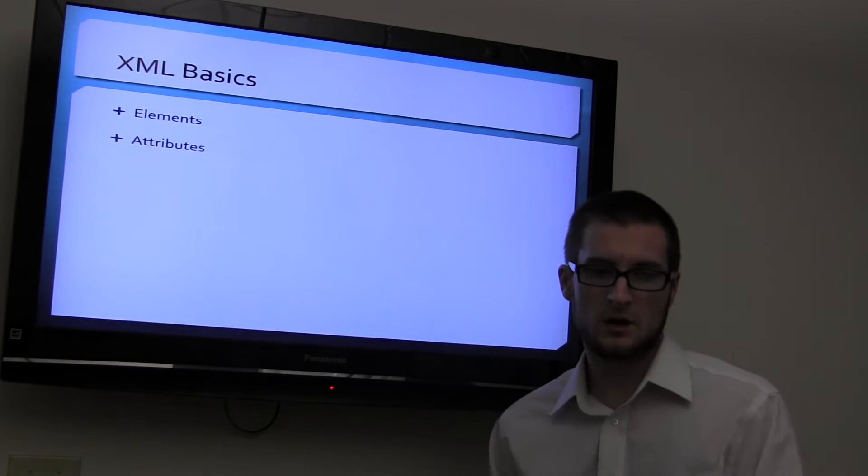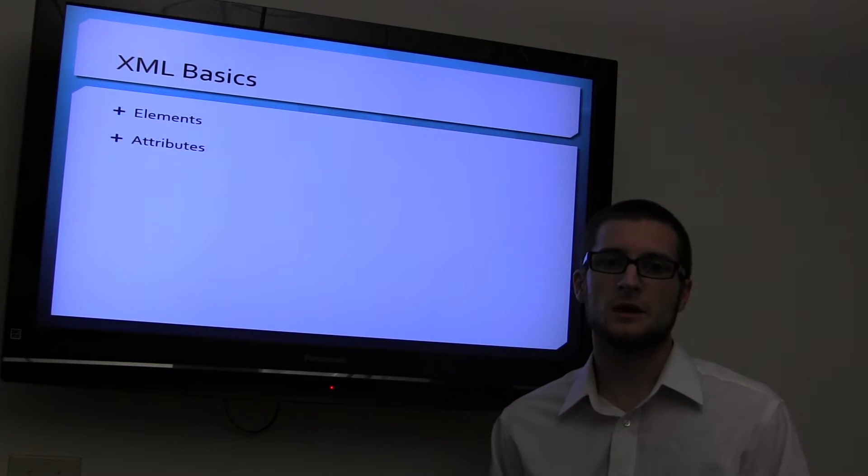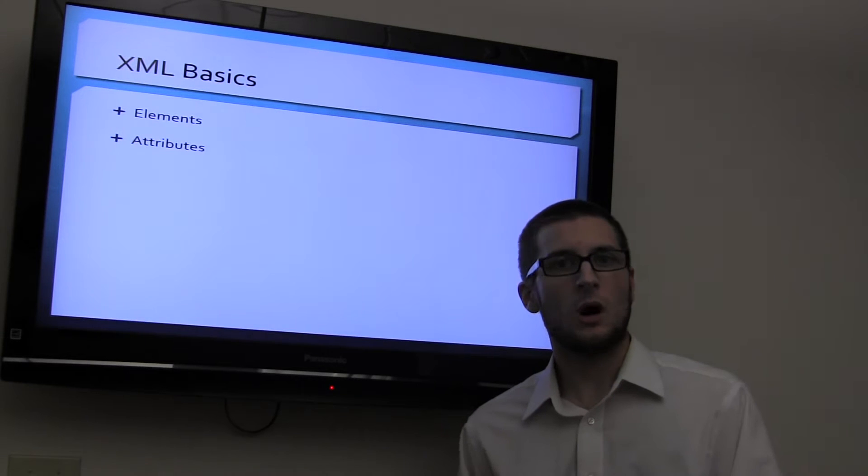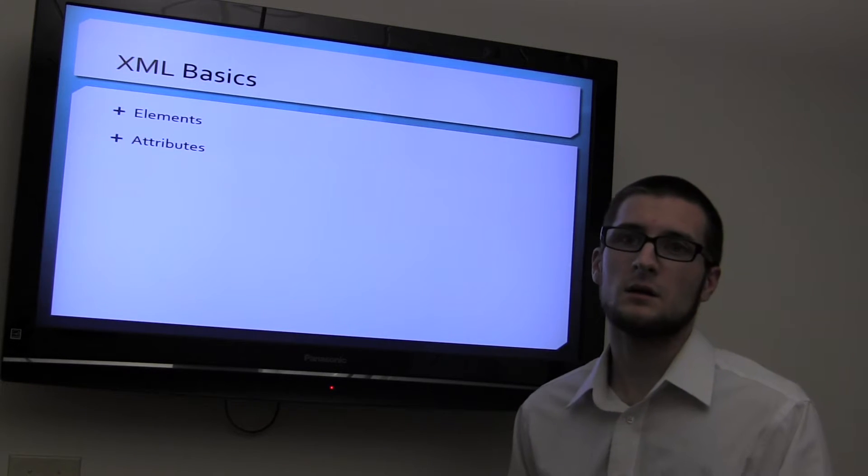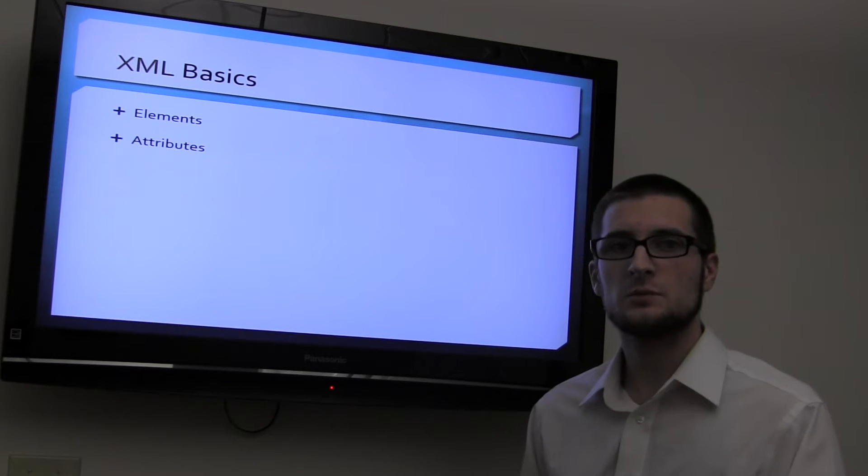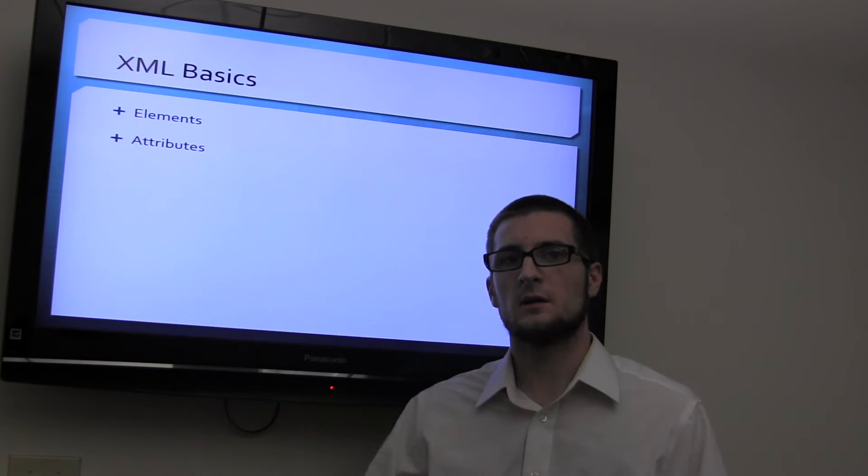XML basics are elements and attributes. These are just basic things. Going back to the article example, an author would be an element. The abstract would be an element. And then attributes are everything that's underneath that, like the smaller structure broken down into.